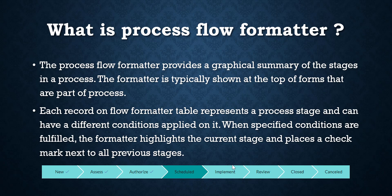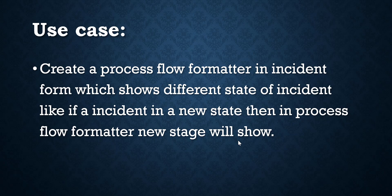The process flow formatter looks like this — whatever stages are already fulfilled or completed will have a checkmark, and the current stage will be highlighted. You may have seen something like this in the Change Request form. Today we will create a process flow formatter like that.